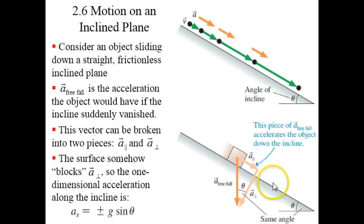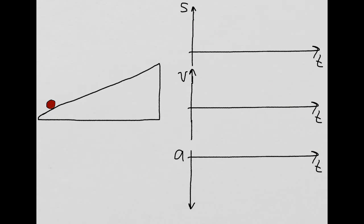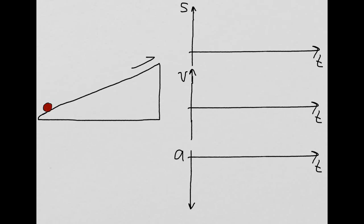If you define positive to be up the incline, then the acceleration is negative g sine theta. Now, let's investigate the motion of a red ball which starts at the bottom of a ramp, rolls up the ramp, slows down, and then starts rolling back down. We define the distance up the ramp as s — Knight uses s for distance.